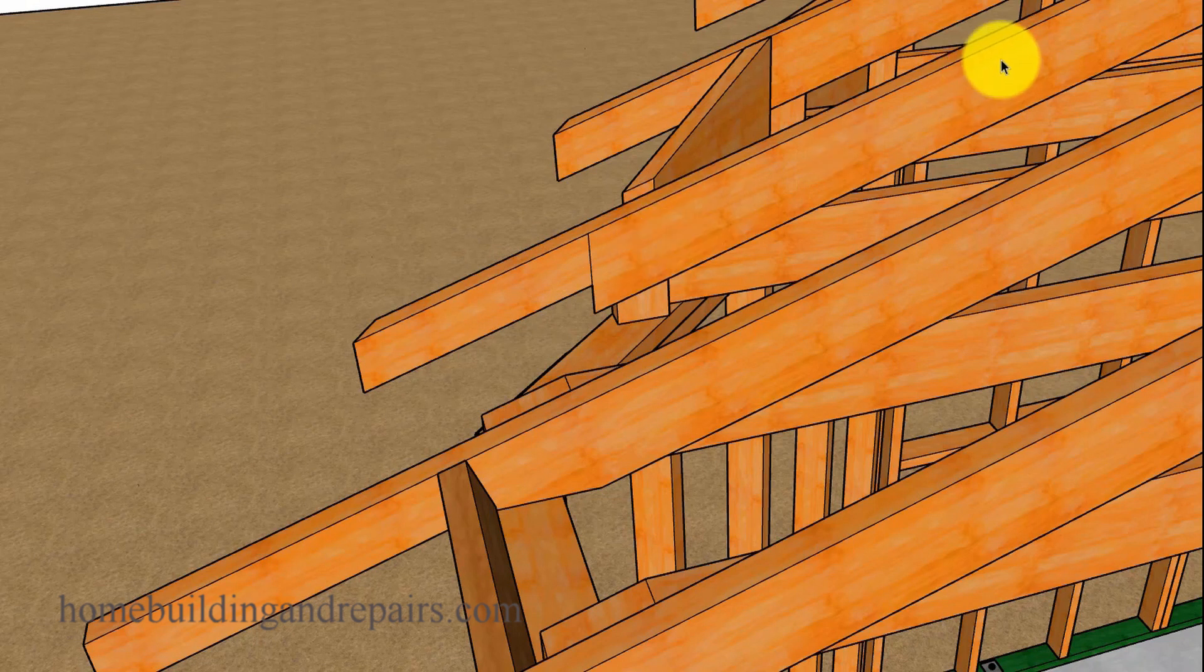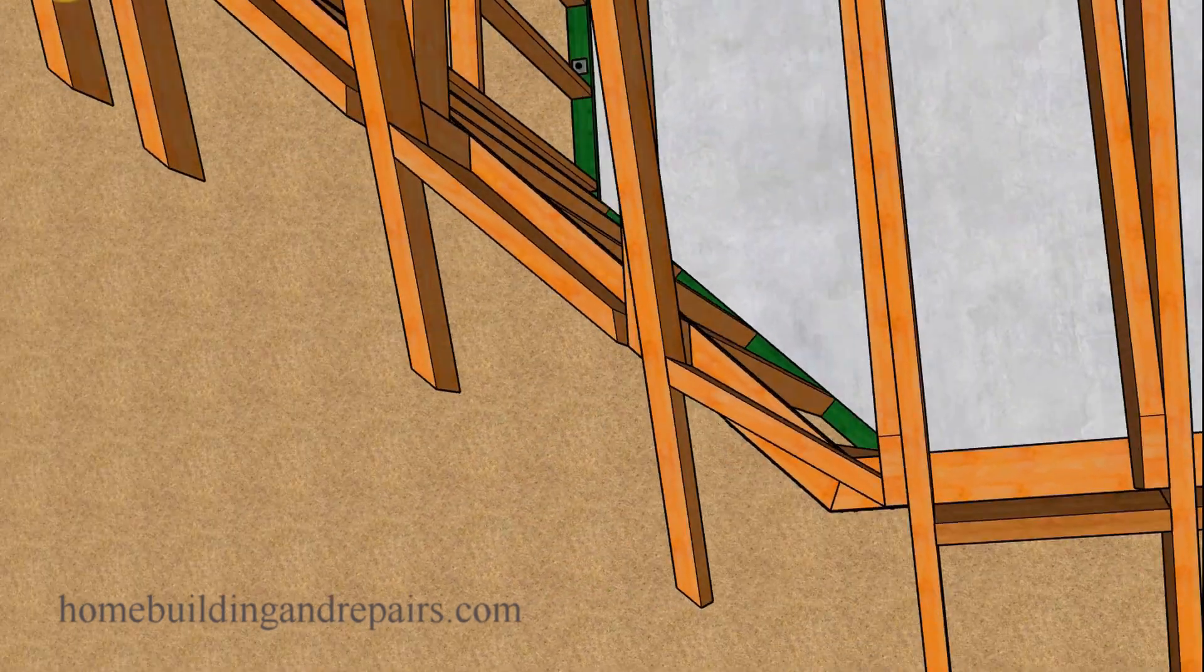So put the rafter in. You're going to use some screws to attach it to the ridge. Maybe use some screws to temporarily attach it to a board, maybe the ceiling joist, just even the straight edge to prevent it from moving. And then you could mark everything out, pull the board down, and cut everything that you need.